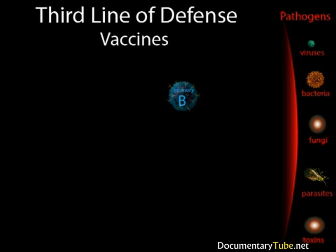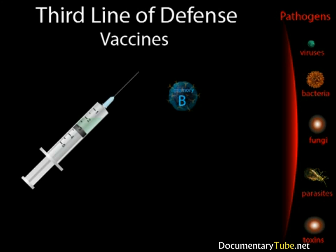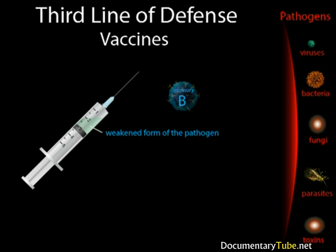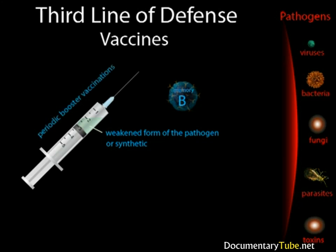Memory B cells are the means by which vaccinations provide immunity to certain pathogens. There are two basic types of vaccines. The first type contains a weakened form of the pathogen itself. Since the pathogen is weakened, your body's immune system will destroy it before it can overtake your body — even though the vaccine actually contains a disease-causing pathogen, it is safe because the pathogen is so weak. The other type of vaccine contains a synthetic chemical that makes the body react as if a certain pathogen has entered the body, causing the immune system to produce antibodies and memory B cells. Even though memory B cells are long-lived, they don't last forever, so some vaccines require a booster to boost the memory of the infection.